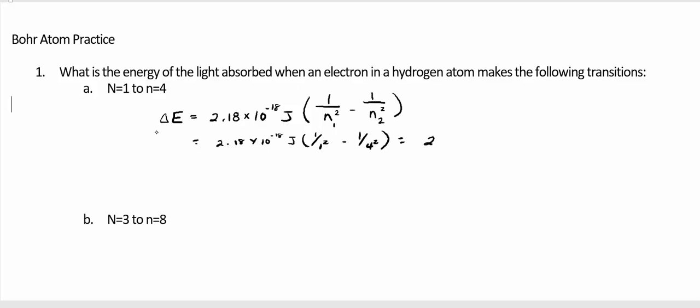So this is 2.18 times 10 to the negative 18 times 1 over 1 minus 1 over 16. Make sure you do the part within the parentheses first in your calculator, and you will get an energy of 2.04 times 10 to the negative 18 joules for A.